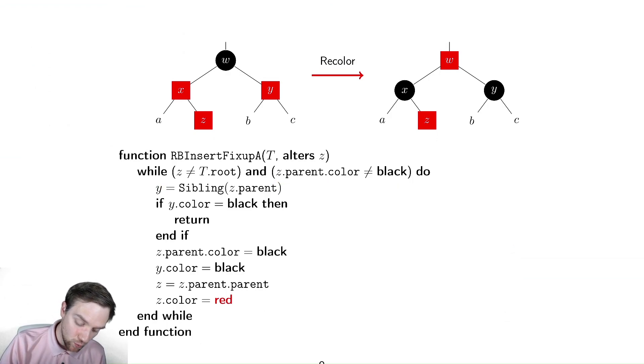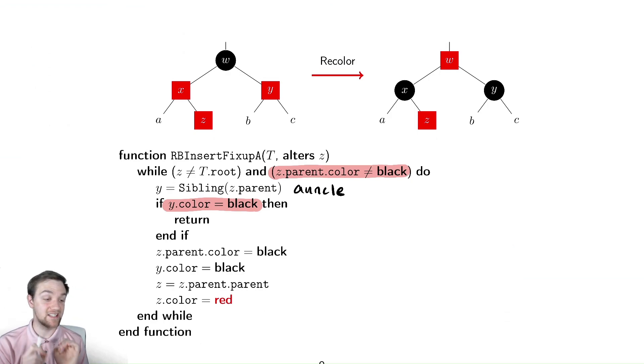So if these two things aren't the case, we then need to find out what is the sibling of our parent, our uncle. So maybe we write that in here, that's the uncle. And if the color of that uncle, the sibling of my parent, is black, then I'm not in this case. So this check here and this check here are to verify that we are in the correct situation for needing to apply this fix.